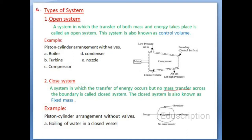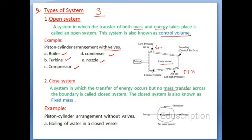Generally there are three types of system. The first one is the open system. A system in which the transfer of both mass and energy takes place is called an open system, also known as control volume. Examples include a piston-cylinder arrangement with valves, boiler, turbine, compressor, condenser, and nozzle. For example, in a compressor, air goes in at one pressure and volume, and exits at higher pressure and decreased volume — mass is changing, so this is an open system.